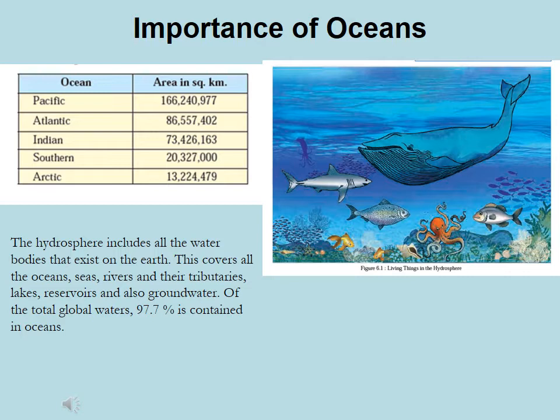The table shows the ocean name and its area in square kilometers. The hydrosphere includes all the water bodies that exist on the earth. This covers all the oceans, seas, rivers and their tributaries, lakes, reservoirs and also ground water. Of the total global waters, 97.7% is contained in oceans.